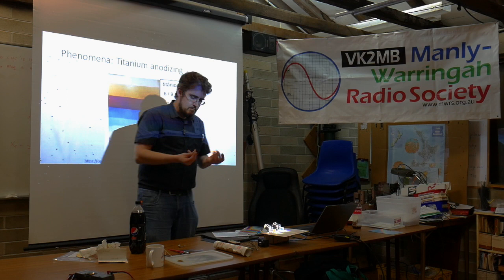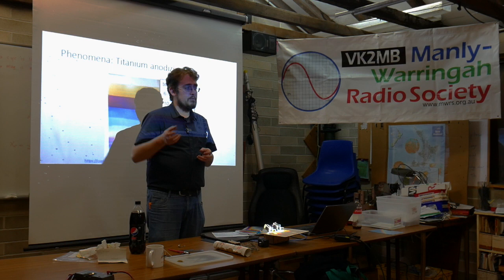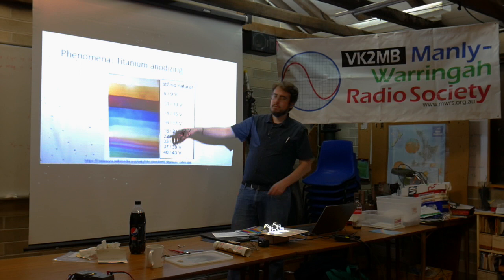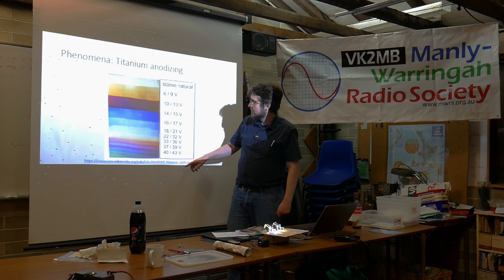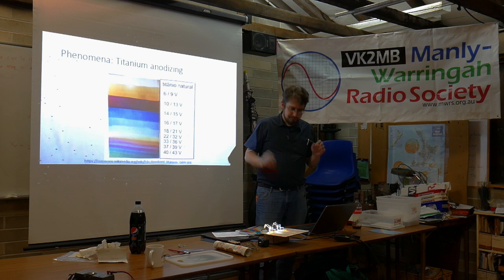If you've got titanium mugs or pens or whatever, you can sand them back and apply this. The colour is a direct result of the voltage. Here's someone's reference chart for how to anodise titanium hanging on the wall of their shop: 'I want sky blue, so I'll set it at 17 volts.' It's literally that simple.